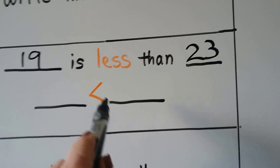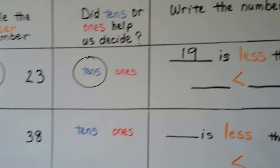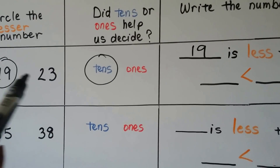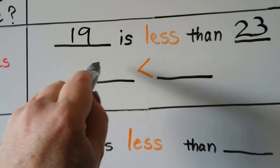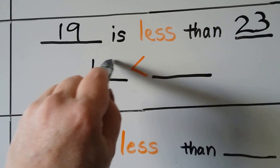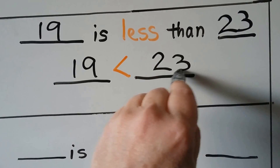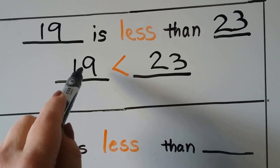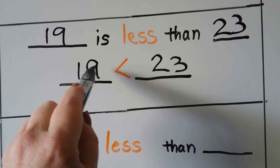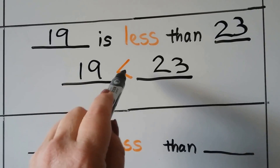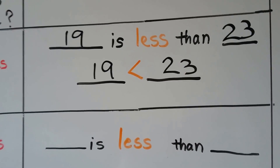We can write it using the symbol. The tip of the sign is facing the smaller number, and the big open part is facing the larger number.